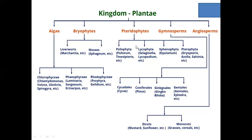Pteridophytes have four classes: Psilophyta (e.g., Psilotum), Lycophyta (e.g., Selaginella), Sphenophyta (e.g., Equisetum — the horsetail fern), and Pterophyta (e.g., Dryopteris and Azolla). Azolla is a biofertilizer — it is actually a Pteridophyte that works through symbiotic association. There are many more points we will see in coming videos.